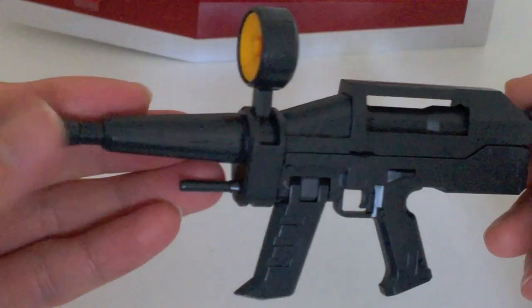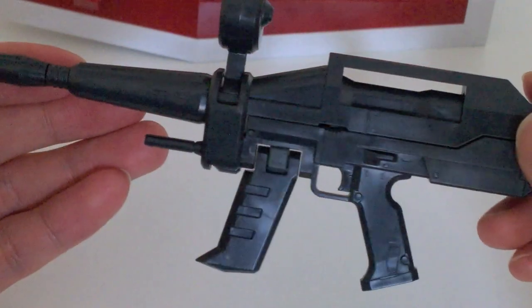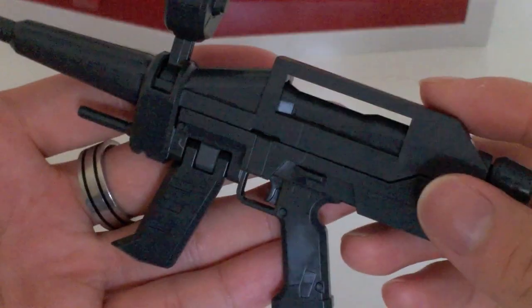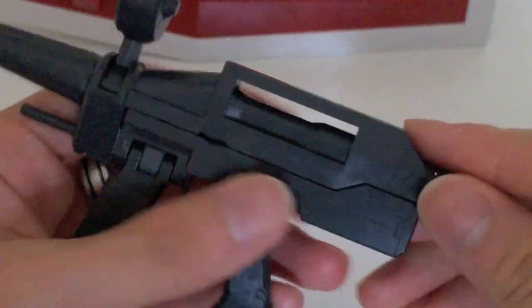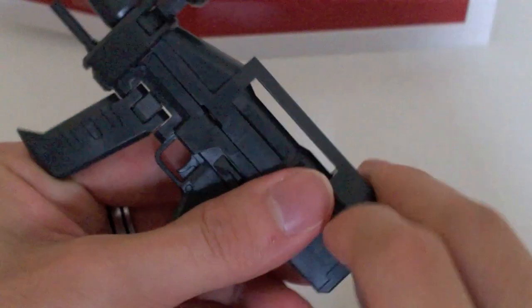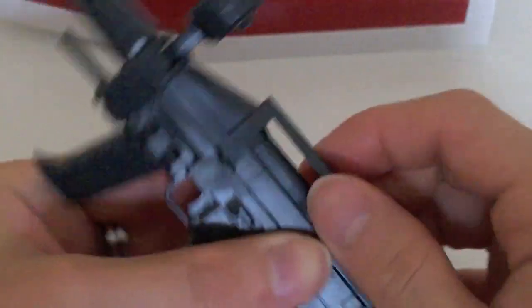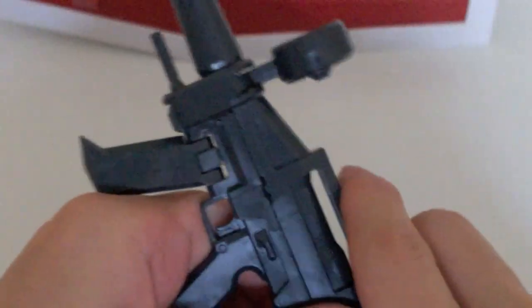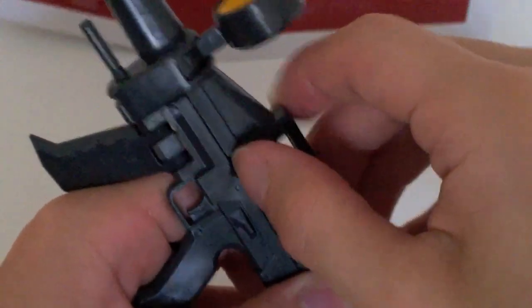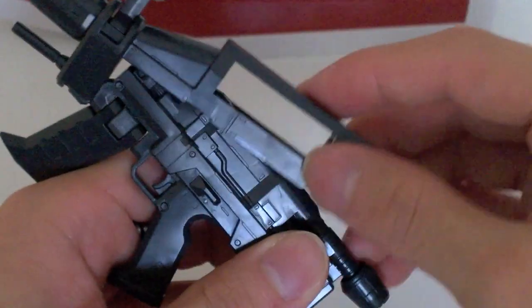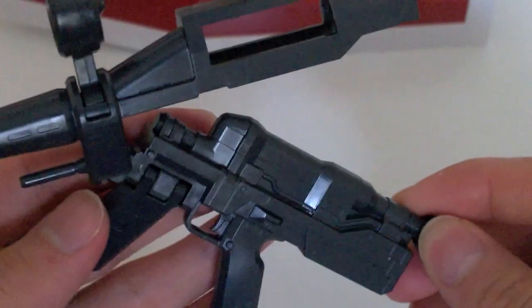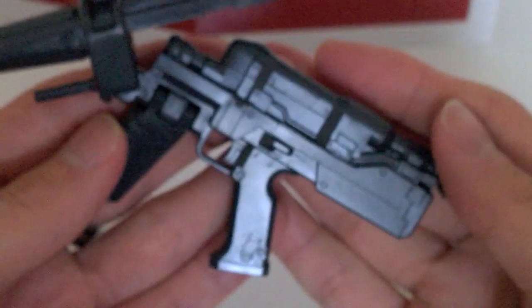Next you have the beam rifle. Nothing too special here either. It does have the gimmick where the top half of the gun can lift up. It's quite tight here, but lift that up and it reveals some small details on the inside.